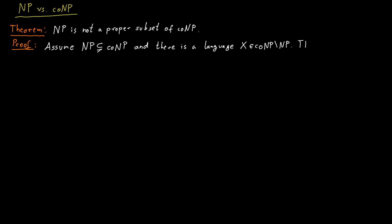Clearly, the complement of X, by the definition of co-NP, has to be in NP. But now the complement of X is also in co-NP, simply because we assumed that NP is a subset of co-NP.